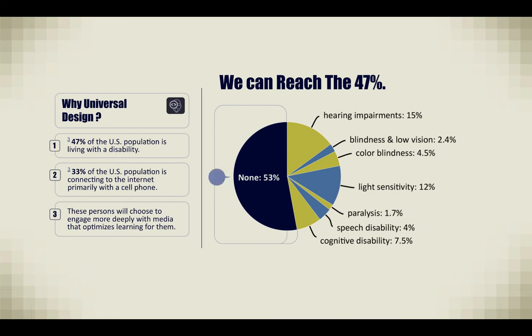Here's the breakdown: Hearing impairments, 15%. Blindness and low vision, 2.4%. Color blindness, 4.5%. Light sensitivity, 12%. Paralysis, 1.7%. Speech disability, 4%. And cognitive disability, 7.5%. You can see by this pie chart that that's nearly half of the entire population.